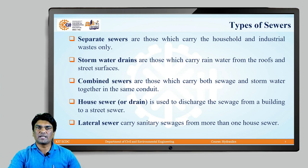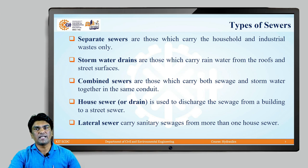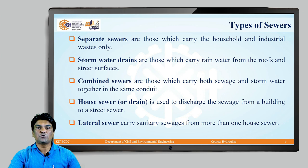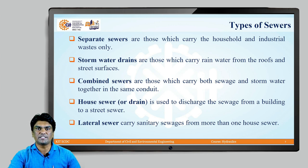As far as types of sewers are concerned, separate sewers carry household and industrial waste only — sewage generated from household levels and industries is collected in separate conduits. Storm water drains or storm sewers carry rainwater from roofs and street surfaces. Combined sewers carry both sewage and storm water together in the same conduit.